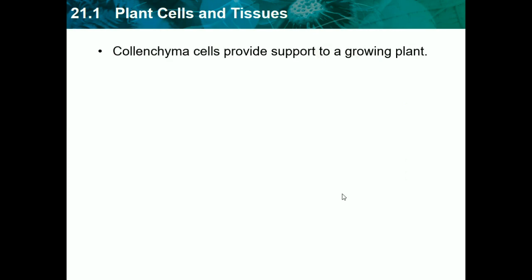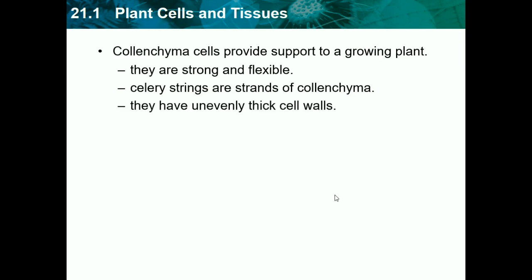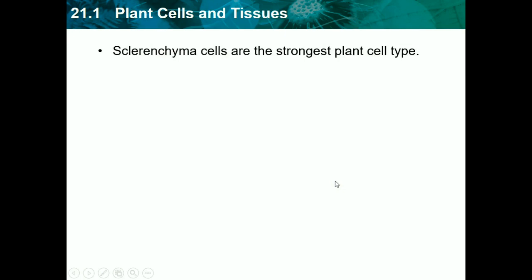Parenchyma cells have flexible thin walls. We have collenchyma cells and they provide support to a growing plant. They're strong and flexible. Celery strings are strands of these types of cells. If you ever eat celery, you find that they come in long strands — if you try to peel it apart, it doesn't just break off. When you bite it, you hear crunches, and this is basically the cell wall of a plant. They have uneven thick cell walls, so they're not all the same size.